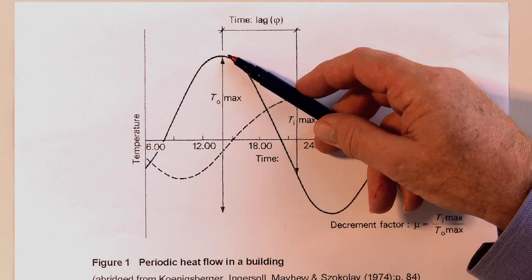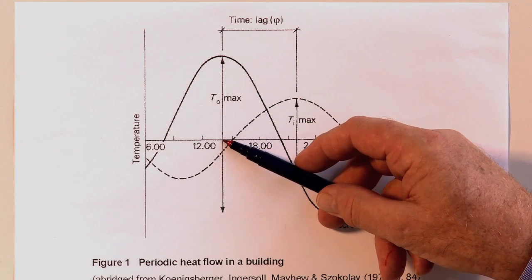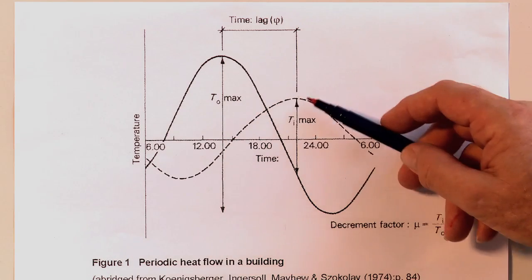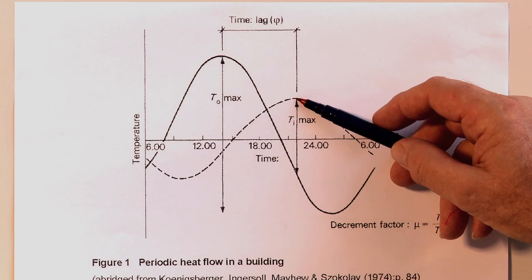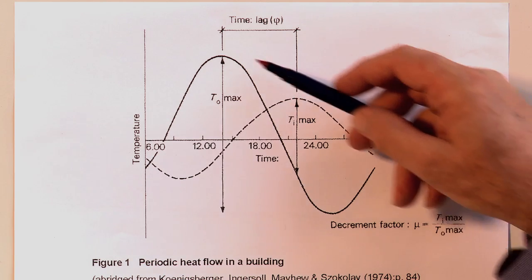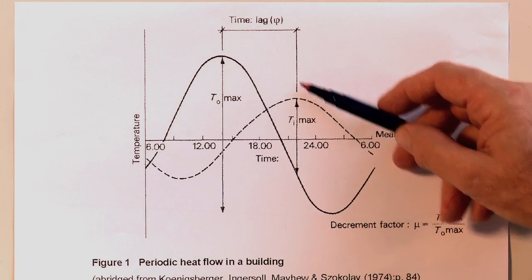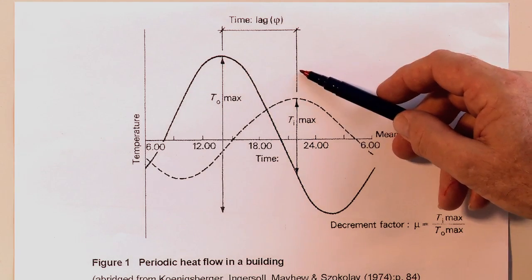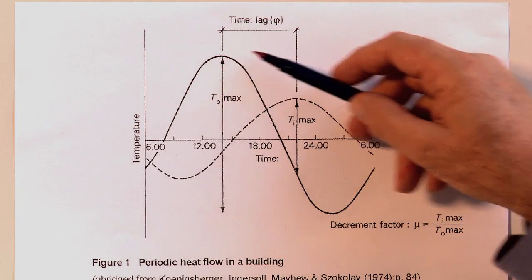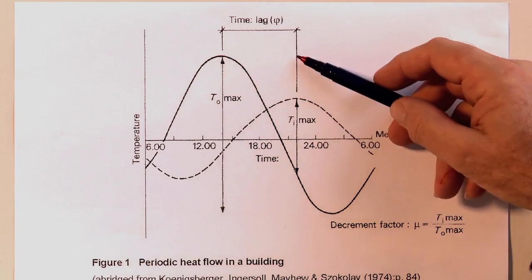The peak outside is here at 2 o'clock, but the peak internally isn't until about 10 o'clock at night. The time lag that it takes for the heat to get through the wall is represented by this.